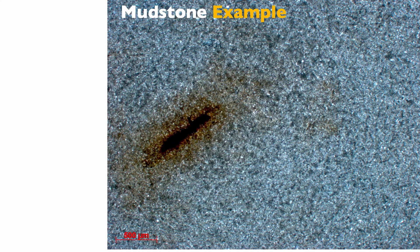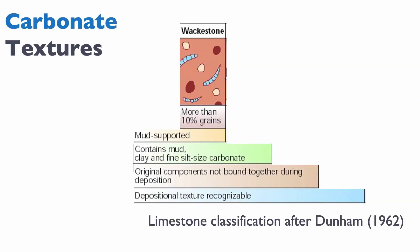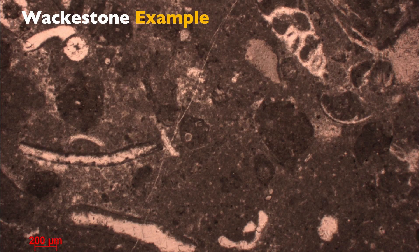Here's an example of a mudstone. This is a rock that is composed almost exclusively of fine-grained mycrite, with the exception of a reddish component. But what if you have more than 10% grain? Well then, if you have more than 10% grain but you're still mud supported — notice that in this diagram the grains do not touch — we call this rock a wackestone.